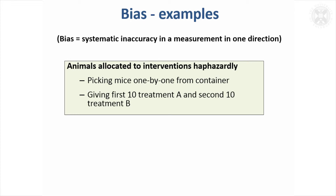Another thing people don't often think about is bias due to allocating your units haphazardly to the interventions. If you have a container full of mice and pick them out one by one, giving the first ten the first treatment and the second ten the second treatment, there could be a bias in picking out the animals — the more aggressive ones might come out quicker, even though you think you're picking at random — so you might get a particular set of mice more likely to come out first, and that can cause a bias.